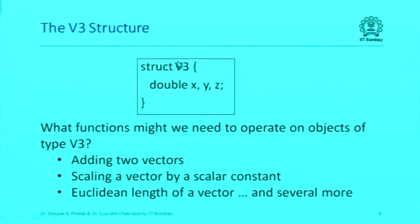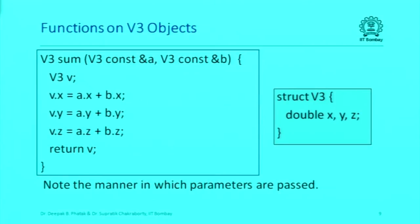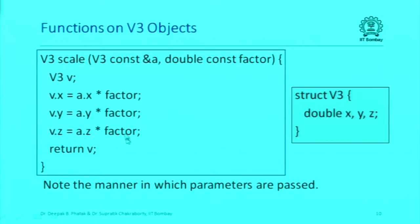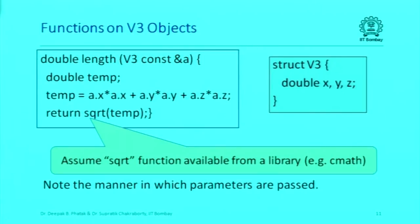With the Cartesian coordinate system, I have three data members: the x, y, and z coordinates. We want to write these functions: take two three-dimensional vectors and add them, scale a vector by a scalar constant, and find the Euclidean length of a vector. Here is a simple function that adds two vectors. A and B are references to objects of type v3, and I have put const here to indicate that these objects cannot be modified within the function — they are read-only parameters. We just add the x, y, and z coordinates and return an object of type v3.